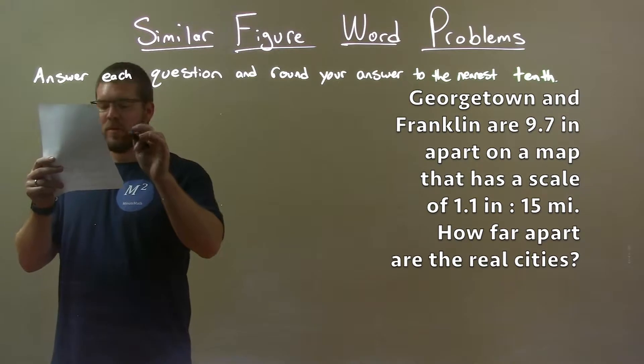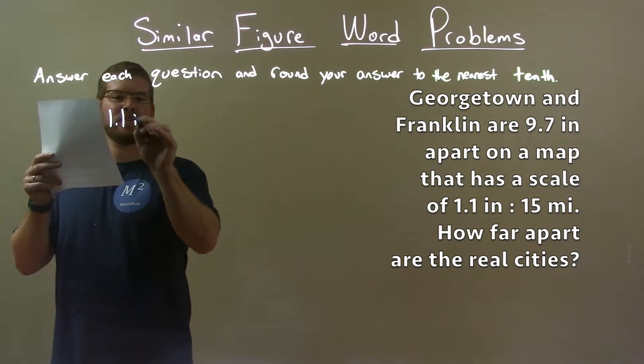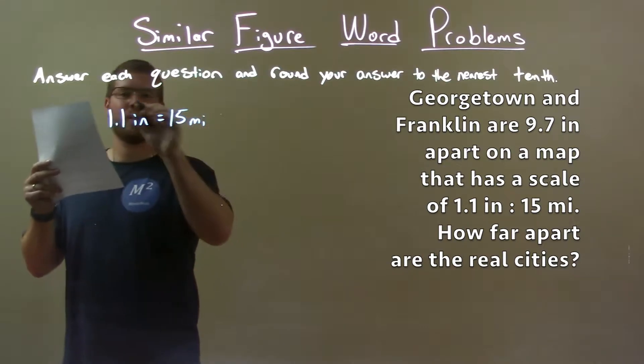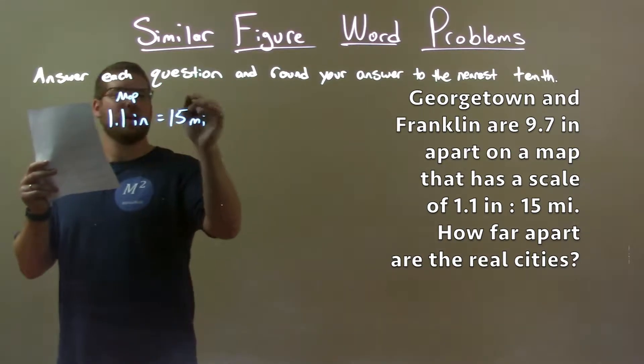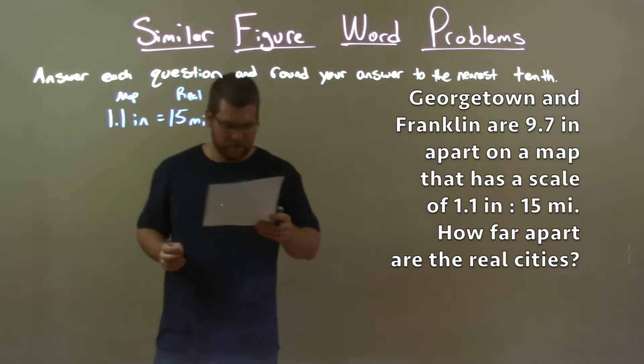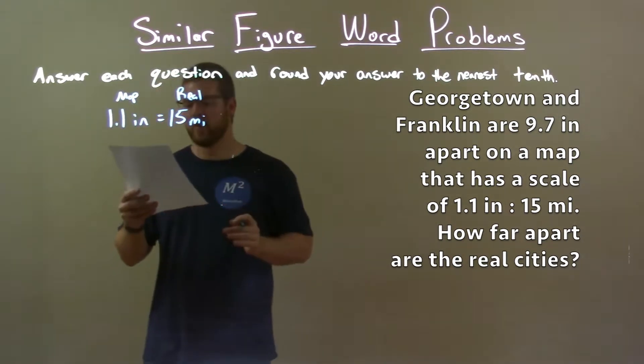So, we're given a scale. I'll start with that. 1.1 inches is equal to 15 miles. So it's 1.1 inches on our map. In real life we got 15 miles. Georgetown and Franklin, they said on the map,